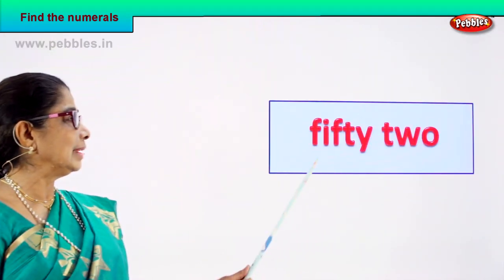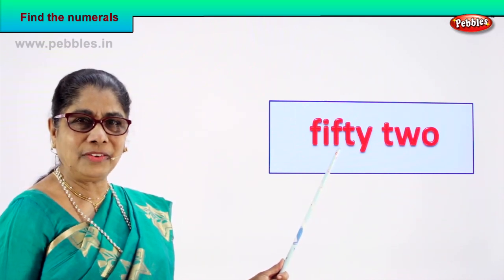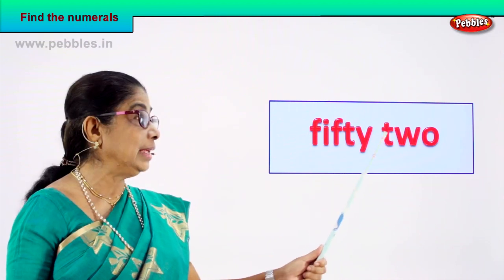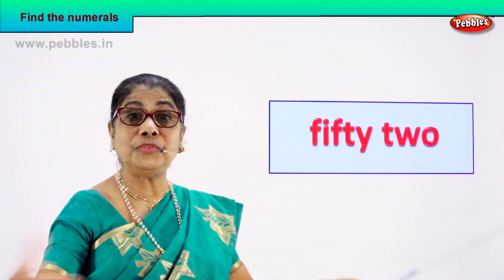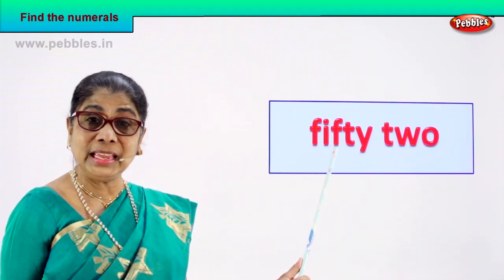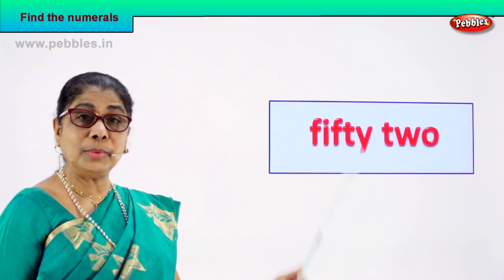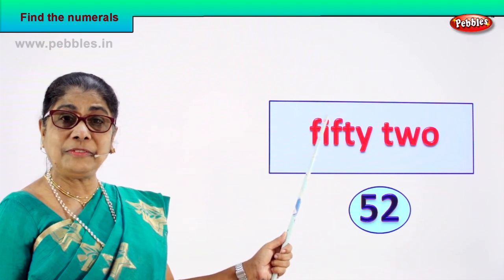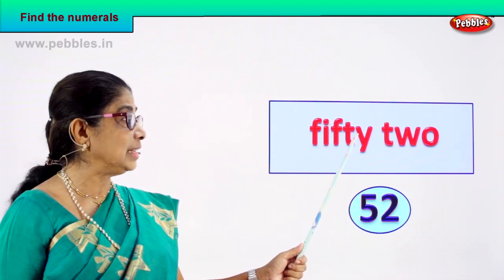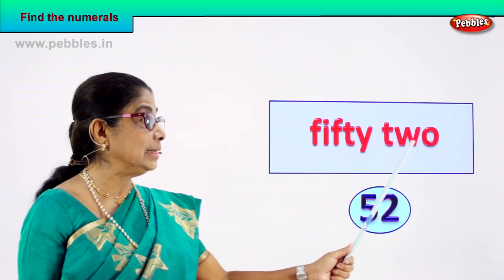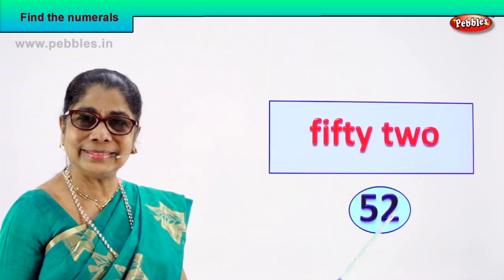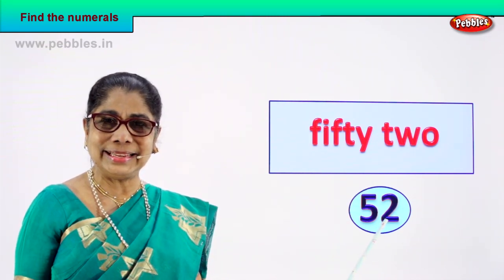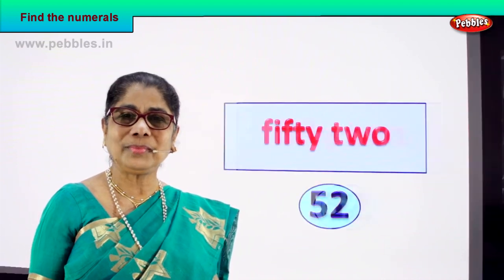Look, let's look at our first exercise. What is this? Read for me, spell and read: F-I-F-T-Y, 50. T-W-O, 2. Very good! So what is the numeral? 50 and 2, so the numeral for this number name is 52. Very good! Spell it: F-I-F-T-Y, 50, T-W-O, 2. You should be able to say 52. It's a nice exercise, isn't it?